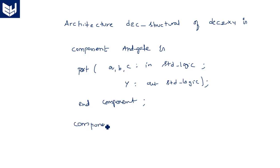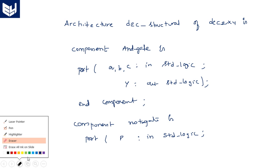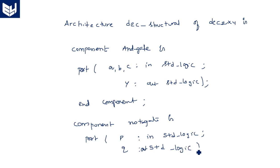What is the other component we need? NOT gate. Component NOT_gate is port of P in std_logic. It is NOT gate means only one input. Q is out std_logic. End NOT_gate.